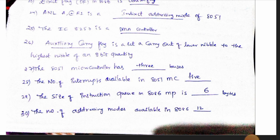The types of addressing modes include indirect addressing mode, direct addressing mode, and register addressing mode. You can choose examples from each.